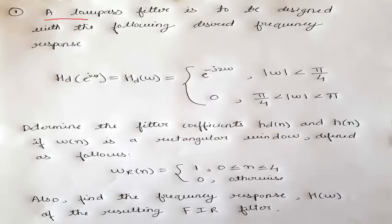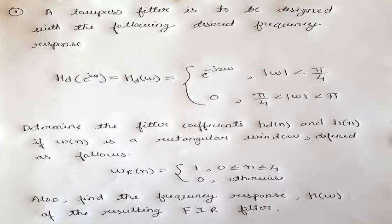A low-pass filter is to be designed with the following desired frequency response: hd of omega equals e raise to minus j 2 omega for modulus of omega less than pi by 4, and 0 for modulus of omega between pi by 4 to pi. We need to determine the filter coefficients hd of n and h of n, given a rectangular window defined as 1 for n equals 0 to 4, and 0 otherwise.